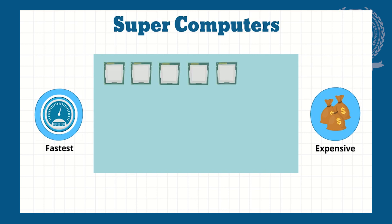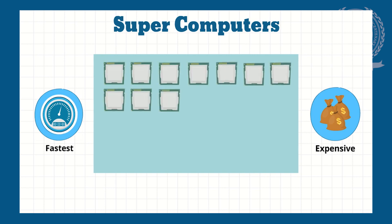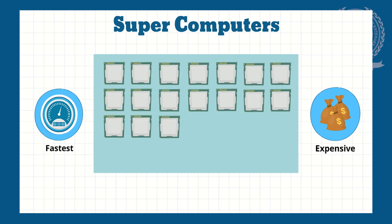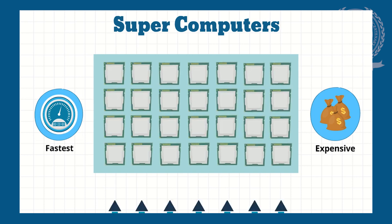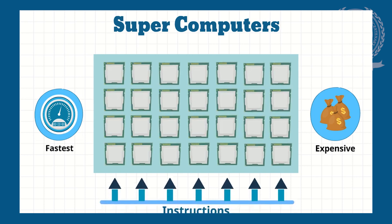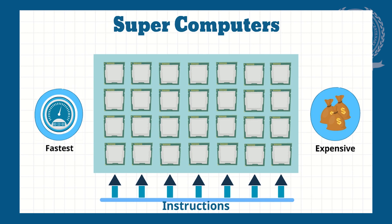Supercomputers are mostly used by governmental agencies and consist of thousands of integrated processors. They are large and have multiple CPUs and can handle many instructions in parallel.